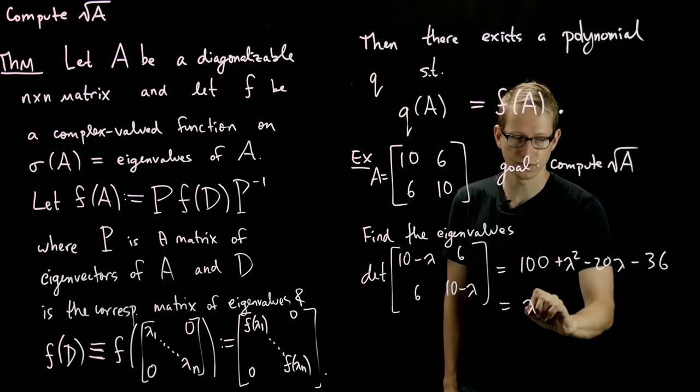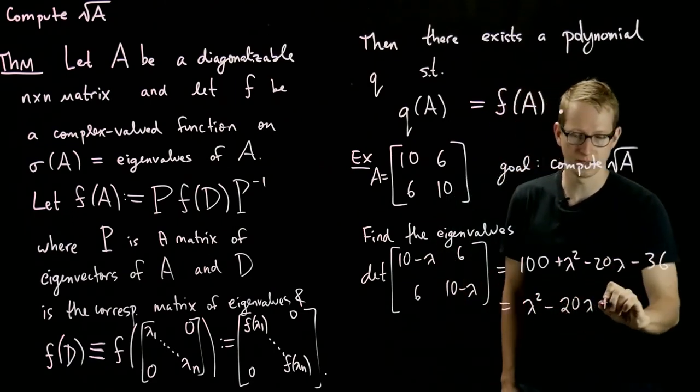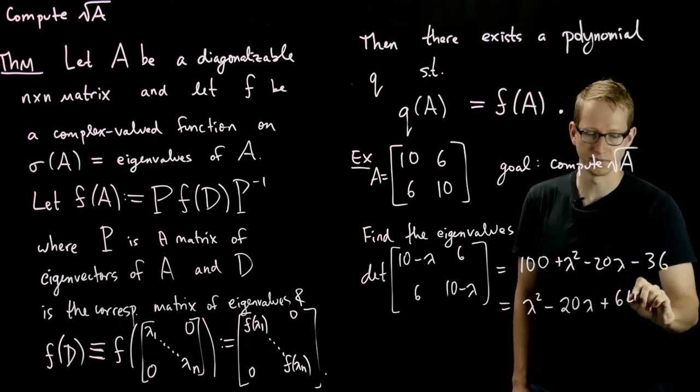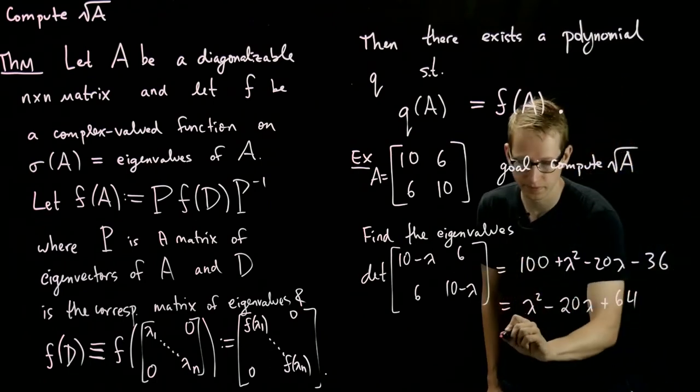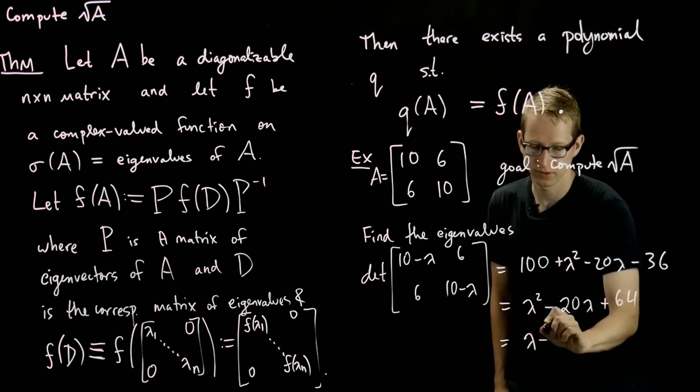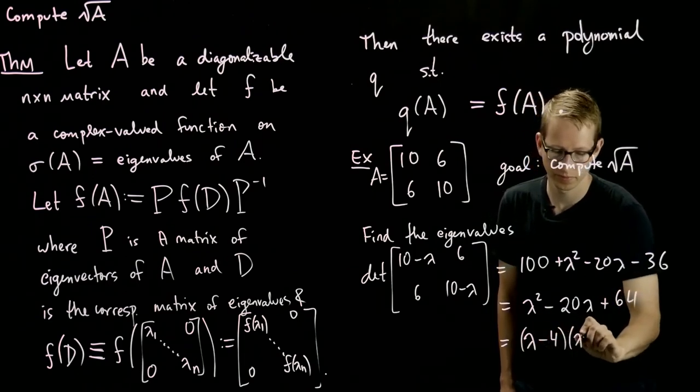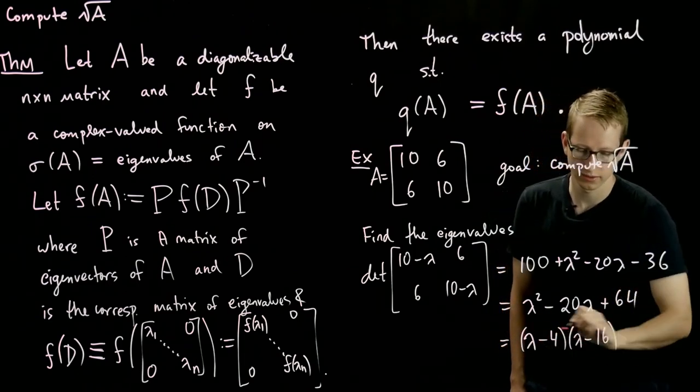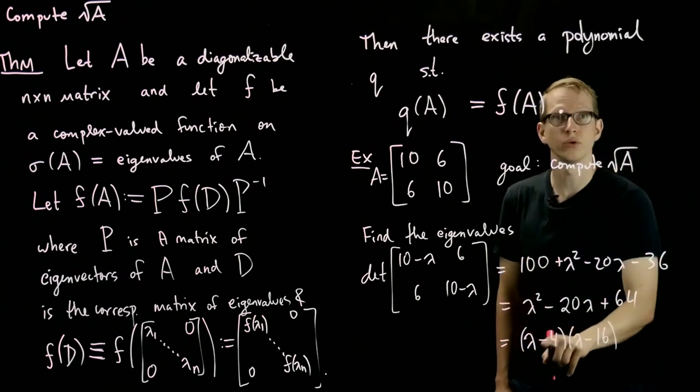And this equals 100 + λ² - 20λ - 36. And some of this simplifies. We get λ² - 20λ + 64. And this also factors into (λ - 4)(λ - 16). So we know what our two eigenvalues are. They are 4 and 16.